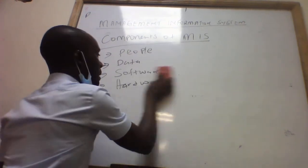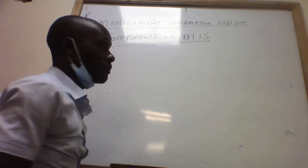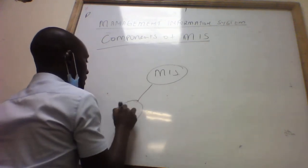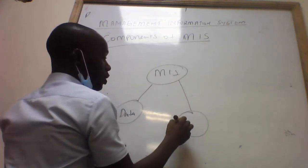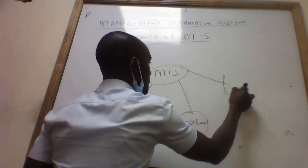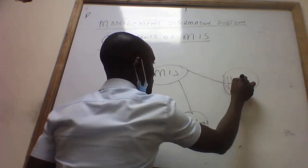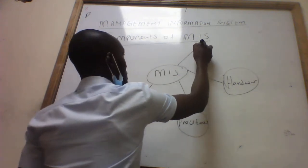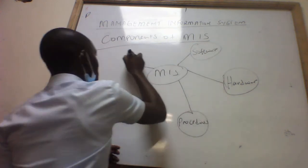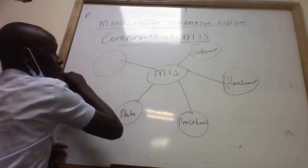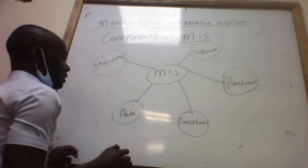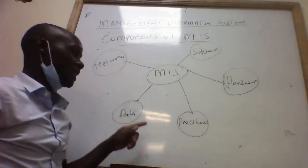Based on that we can come up with a diagram that illustrates the components of MIS. We put MIS at the center, and around it we place data, procedures, hardware, software, and telecommunication or networks as the surrounding components. Let us start with data as a component.